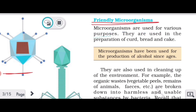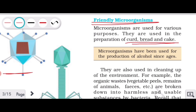Microorganisms are used for various purposes. They are used in the preparation of curd, bread, and cake. You may have seen your mother put a little bit of curd — known as jaman or joran — into lukewarm milk, mix it in a bowl, and keep it aside. By the next morning, the curd is set. This happens because of bacteria — specifically Lactobacillus — which is responsible for converting milk into curd. This bacteria is helpful, not harmful, because it produces a useful product we consume.